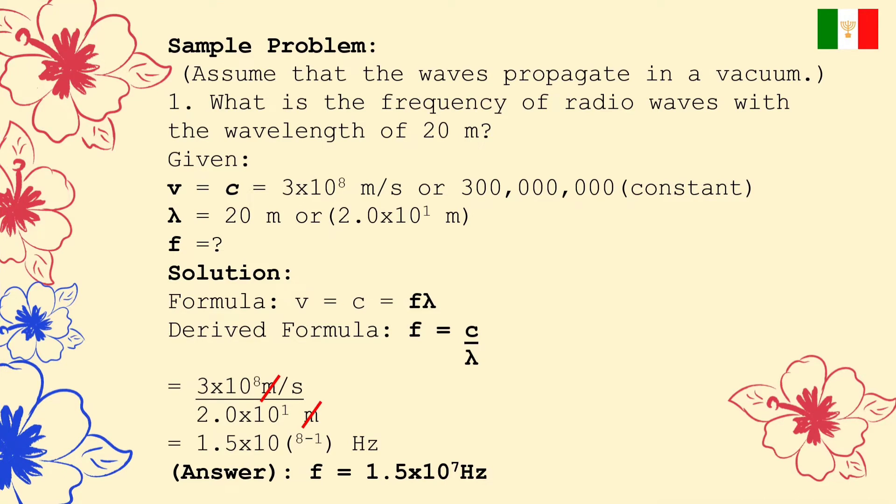Here is the sample problem. Assume that the waves propagate in a vacuum. The question is, what is the frequency of radio waves with a wavelength of 20 meter? First, write the given. V, or C, is equal to 3 times 10 raised to 8 meter per second, or 300 million. And this is constant. Wavelength is 20 meter, or 2.0 times 10 raised to 1 meter. And the unknown is frequency.